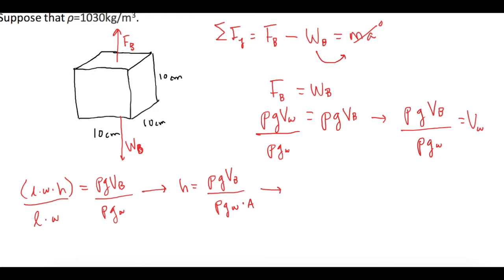They tell us the density of the block is 660 times gravity of 9.8 times the volume of the block, which is 0.1 meters cubed. On the bottom we have the ρ of the water, which is 1,000 for just normal water, times 9.8 times the area of the block, which is going to be 0.1 meter times 0.1 meter, so 0.1 meter squared. Now let's plug all that in and see what we get. 0.066, and this is a height, so it's a distance, so that is meters.